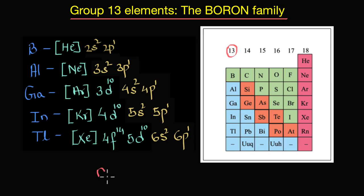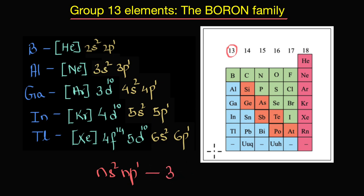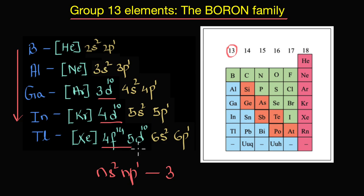The outer electronic configuration of group 13 elements is ns² and p¹, meaning there are a total of three electrons in the valence shell. As we go down the group, we can see the presence of completely filled d and f orbitals in the heavier members of the group.